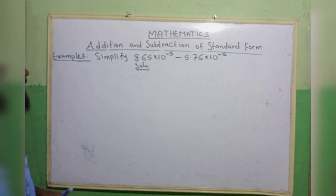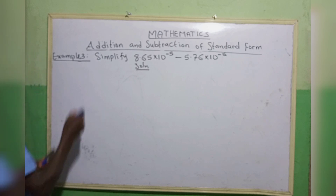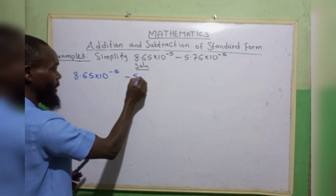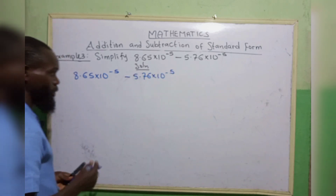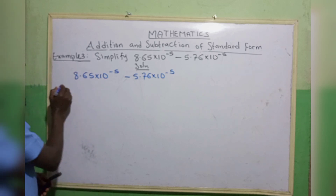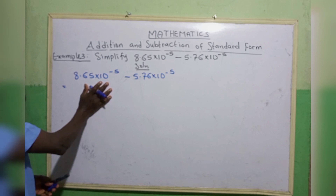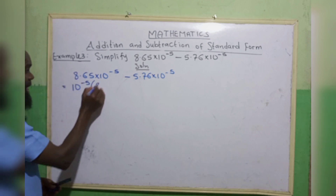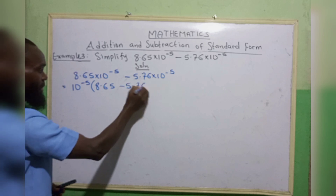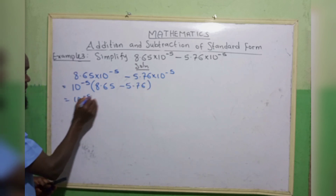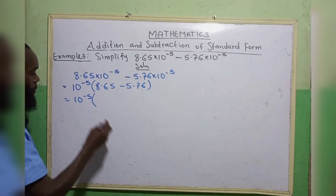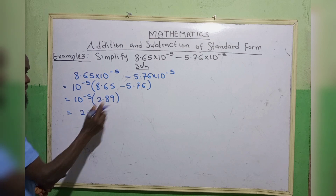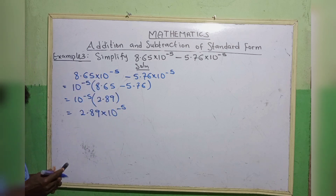Example 3: Simplify 8.65 times 10 to the power minus 5 minus 5.76 times 10 to the power minus 5. The first method is very easy — look at this, we have 10 to the power minus 5 here and 10 to the power minus 5 here. You can take the common factor: 10 to the power minus 5, open brackets, 8.65 minus 5.76, so we subtract and get 2.89. So our final answer is 2.89 times 10 to the power minus 5. This is very direct.